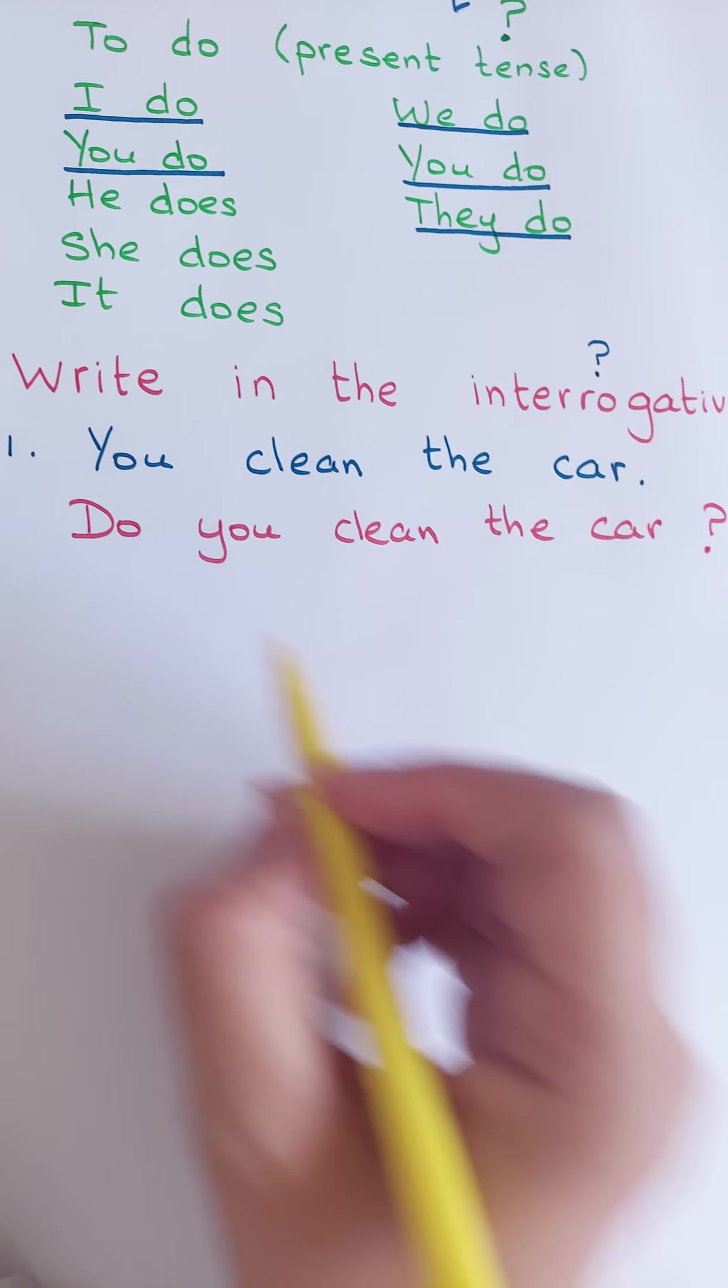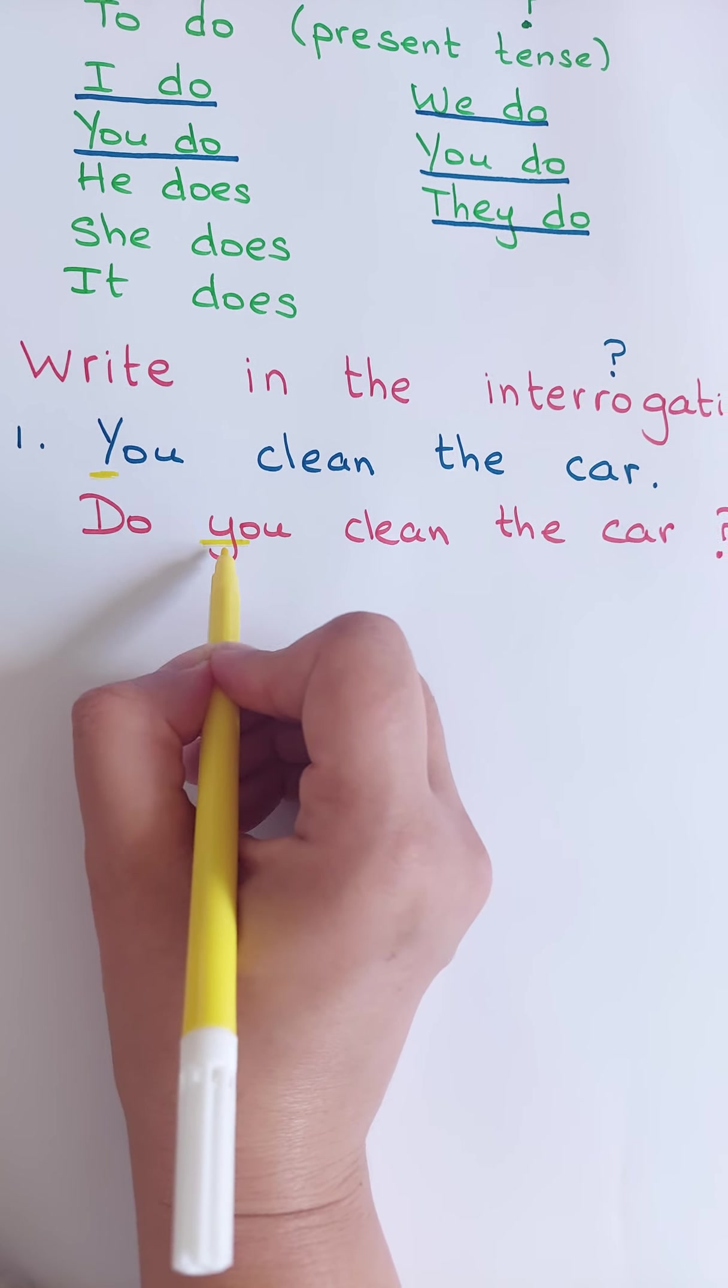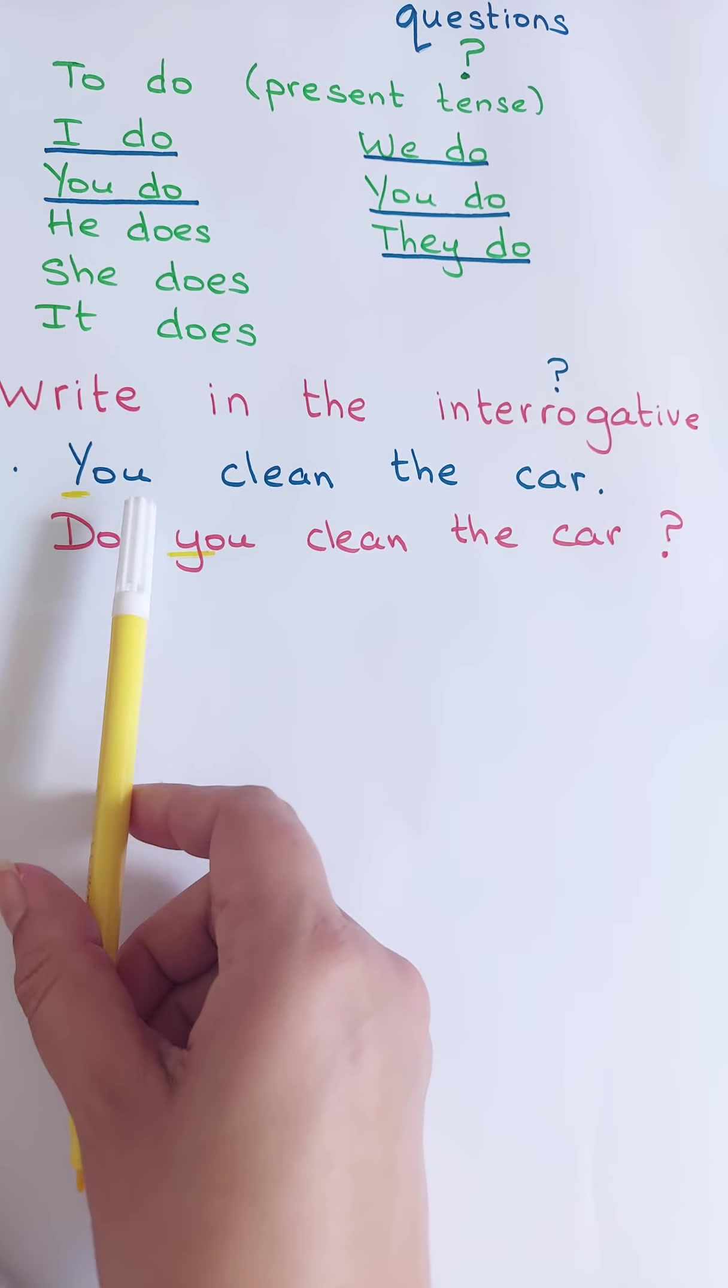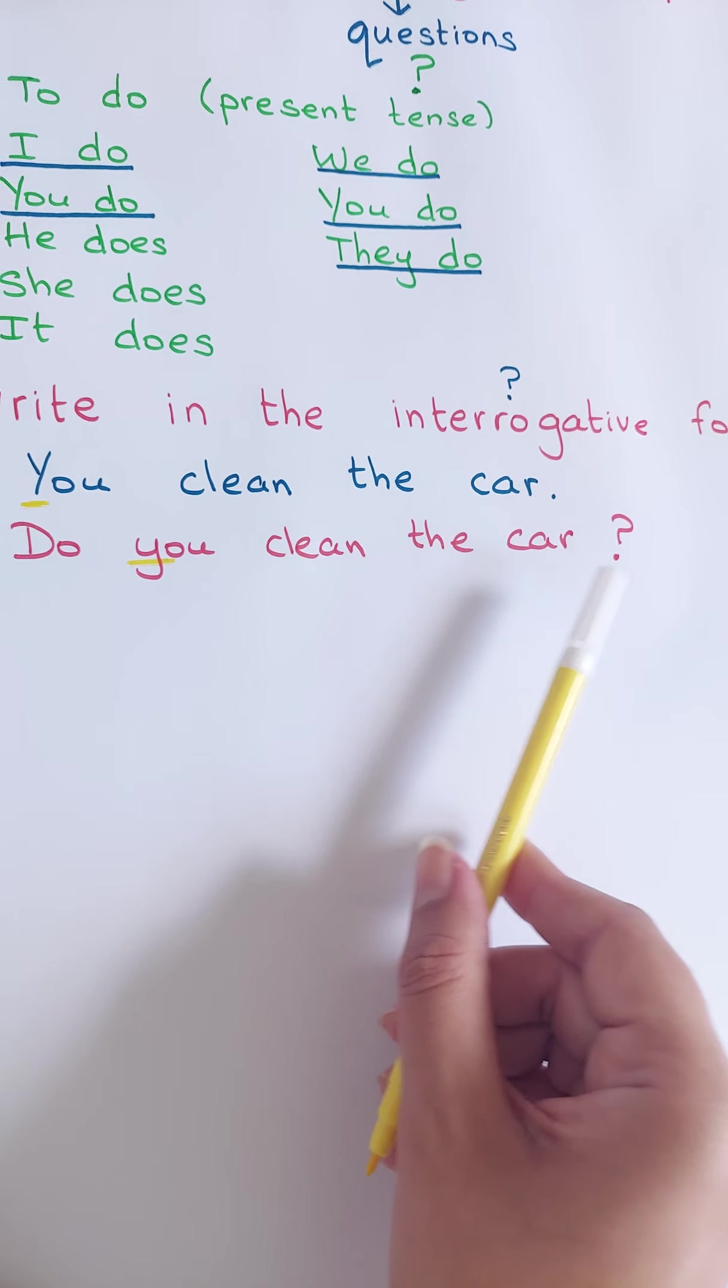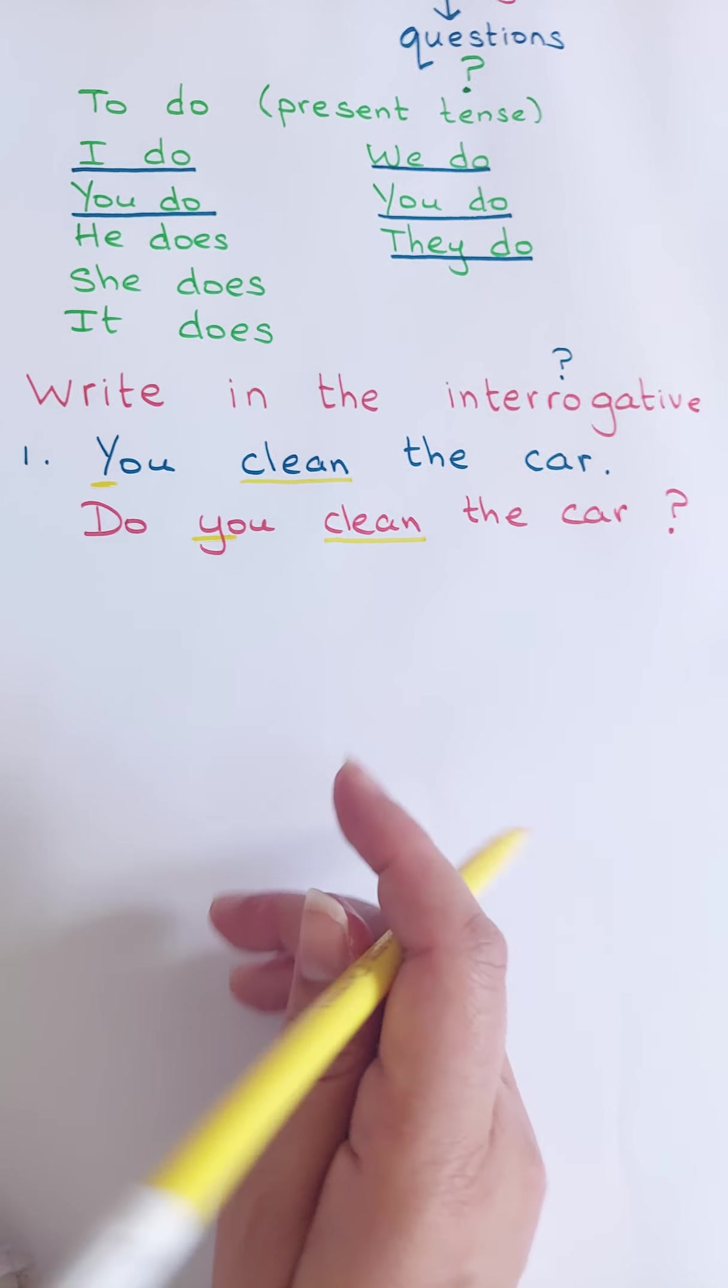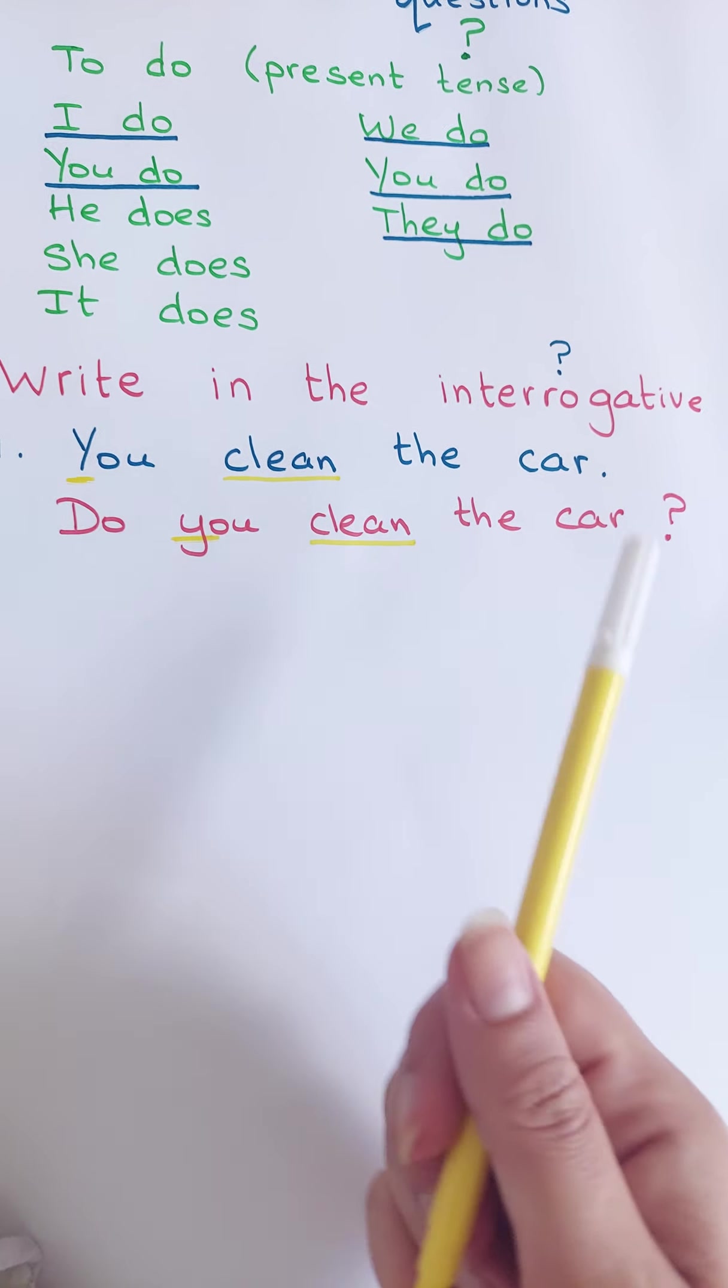Et je dois faire bien attention, ici, c'est un grand Y. Ici, je dois mettre un petit Y. Pourquoi? Parce que ce n'est plus devant. Ici, c'est devant. C'est le premier mot. Ici, ce n'est plus le premier mot. Donc, je ne dois pas oublier de changer, de mettre un petit Y ici. You clean the car va devenir Do you clean the car? Alors, le verbe clean est déjà, ici au présent, ici aussi, c'est à l'infinitif. C'est important, il faut mettre le verbe à l'infinitif. Ça veut dire qu'on ne conjugue pas le verbe. Do you clean the car? Ça veut dire, est-ce que tu nettoies la voiture?